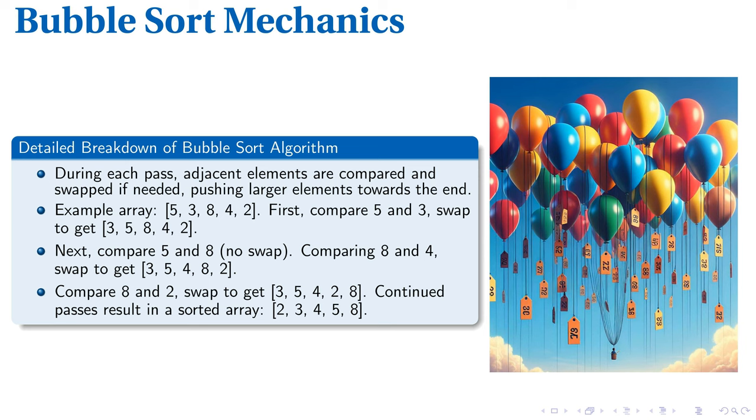It then compares 5 and 8, which don't need swapping. The next pair, 8 and 4, are incorrectly ordered, so they switch places giving us 3, 5, 4, 8, 2. The same happens with 8 and 2. A swap leads to 3, 5, 4, 2, 8.